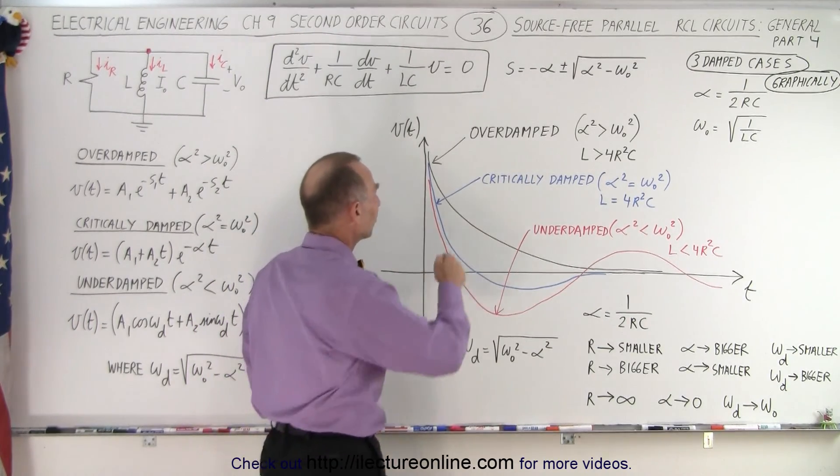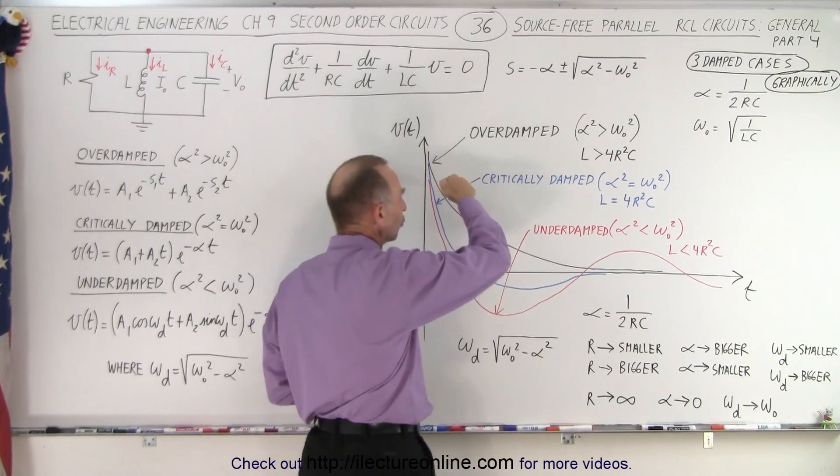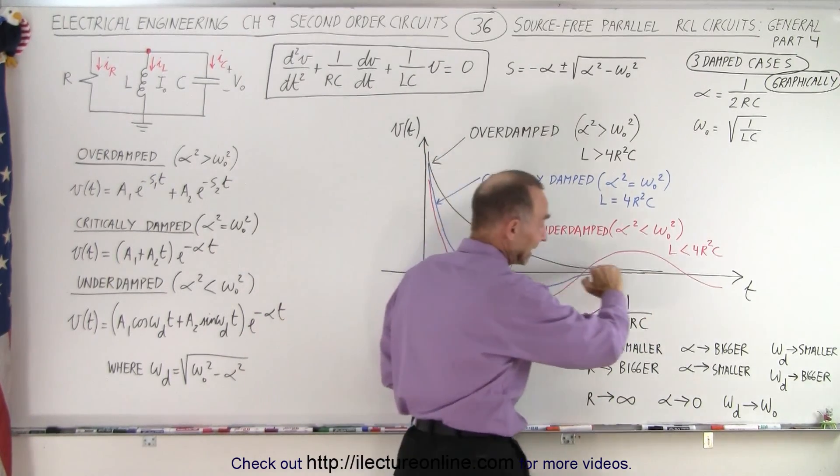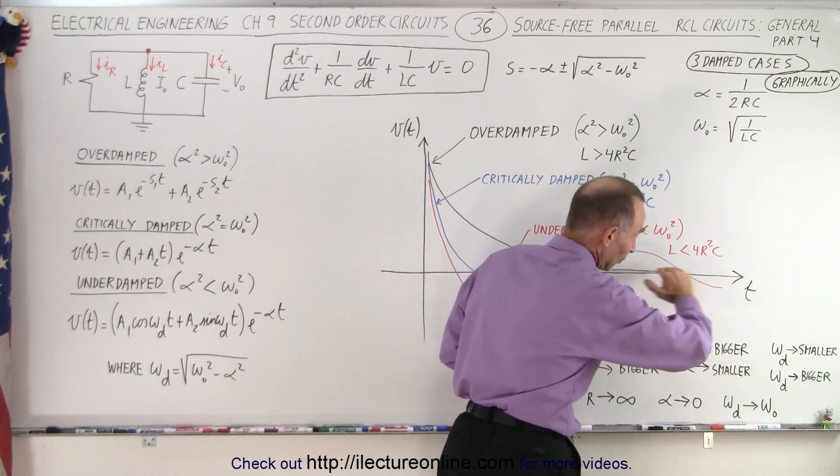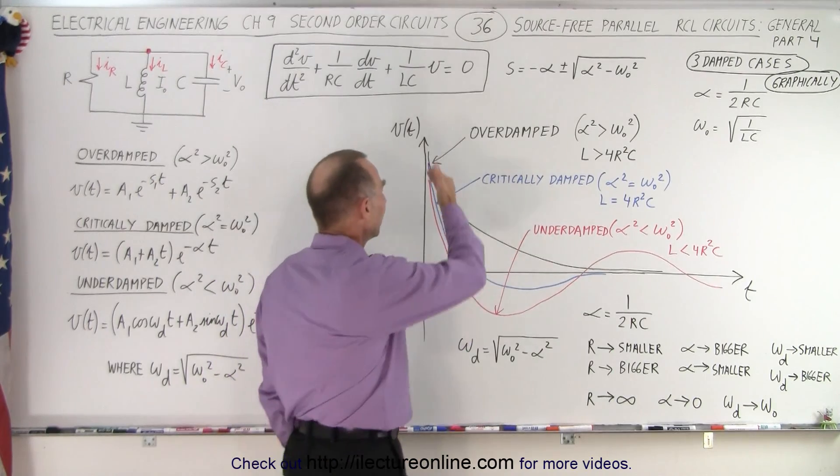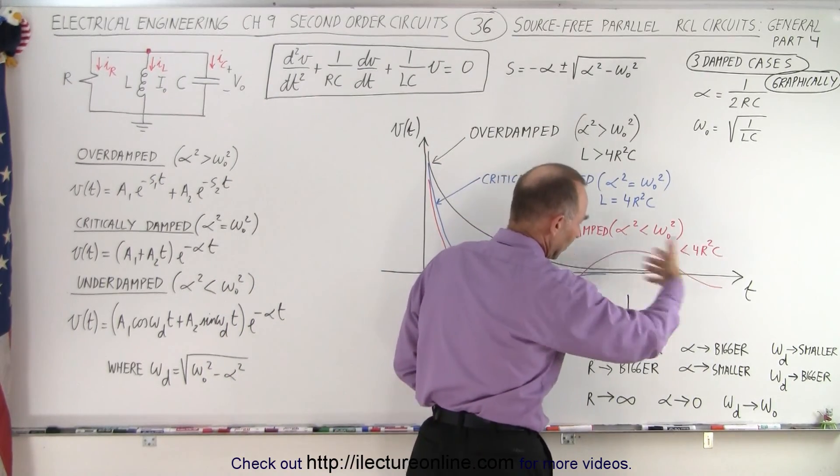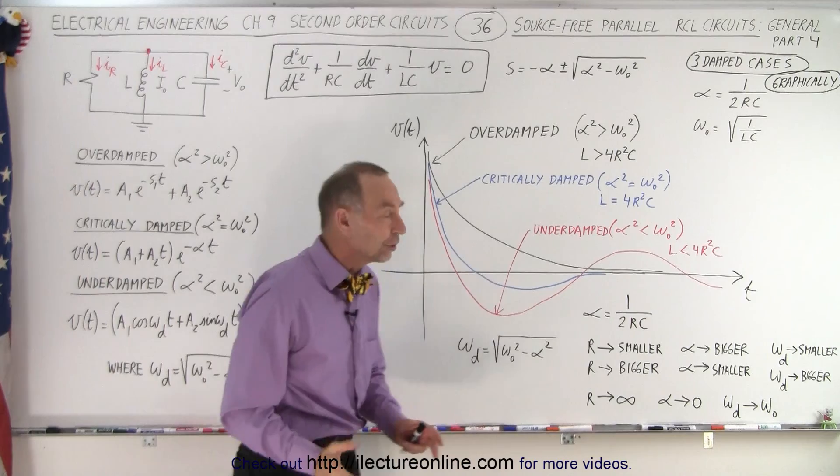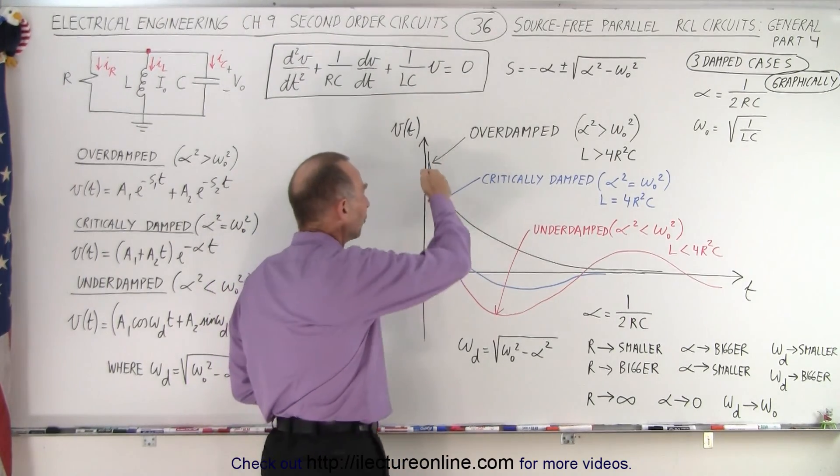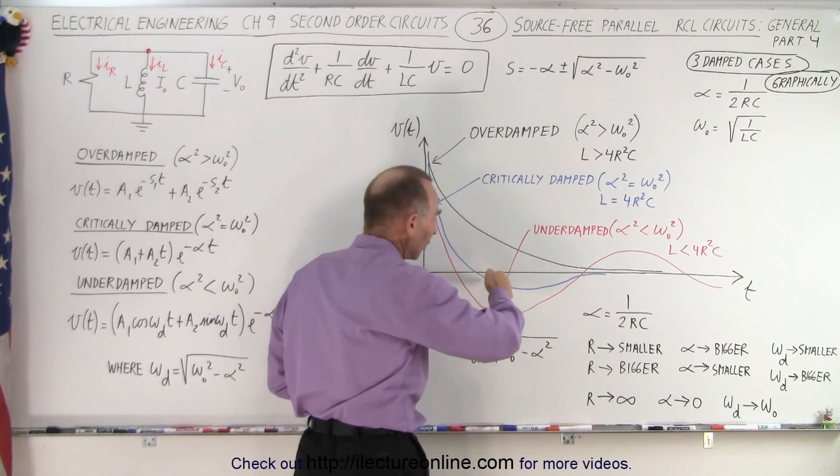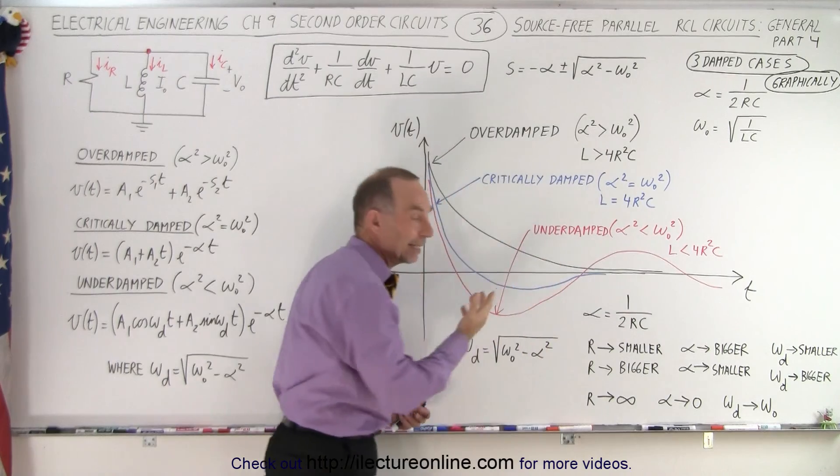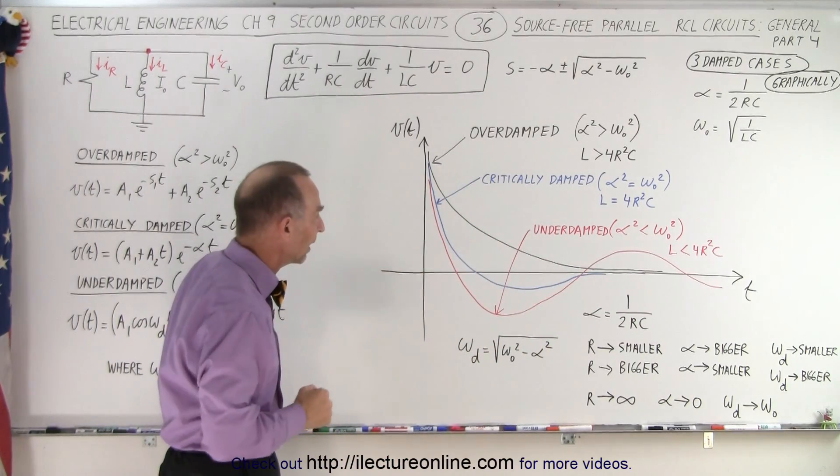First of all, the overdamped case is such that the voltage goes to zero asymptotically. Of course, in theory, it never really gets to zero - it has to go through an infinite amount of time to get to zero. But for practical purposes, after a certain amount of time, the voltage is close enough to zero where we can simply call it zero. The critically damped case: the voltage tends to go past the zero point and then asymptotically reaches zero from below.